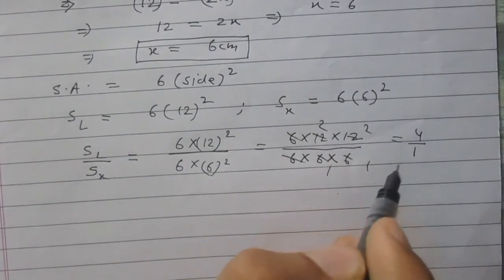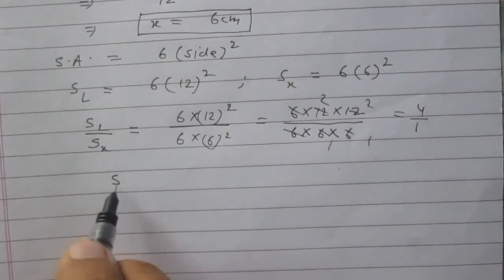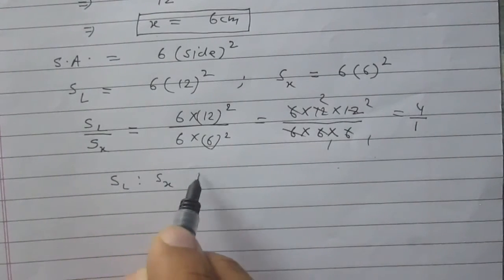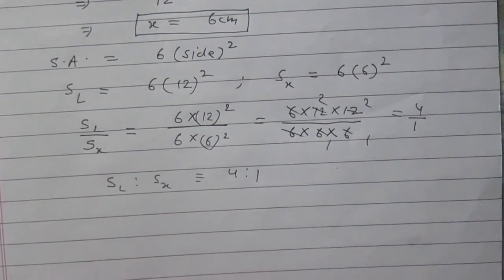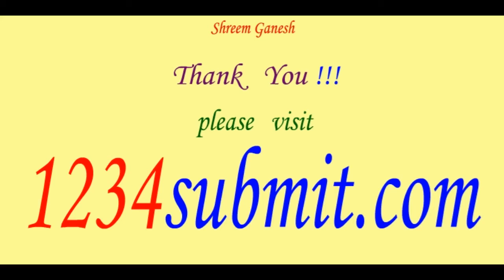You will get 4 divided by 1. So, you can say that ratio of their surface area is 4 is to 1. Thank you.